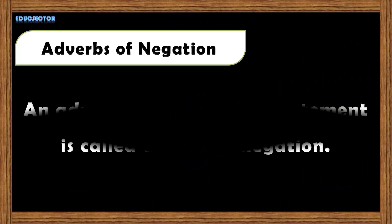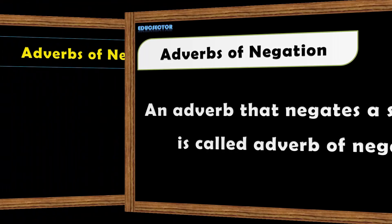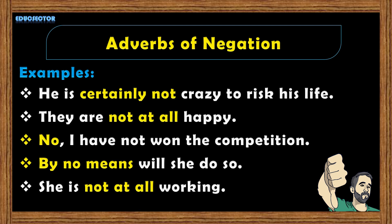An adverb that negates a statement is called an adverb of negation. For examples: 'He is certainly not crazy to risk his life.' 'They are not at all happy.' 'No, I have not won the competition.' 'By no means will she do so.' 'She is not at all working.' Here the words certainly not, not at all, no, by no means are all adverbs of negation.